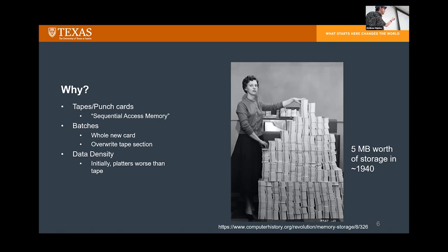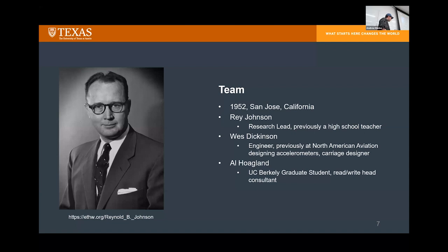The first hard drive was actually worse than magnetic tapes being used at the time in terms of data storage, but the engineers believed it would scale better — and they were very correct. As for who put this together, three names kept appearing in the research. First is Ray Johnson, the gentleman in charge of running the lab in San Jose, California in the early 1950s.